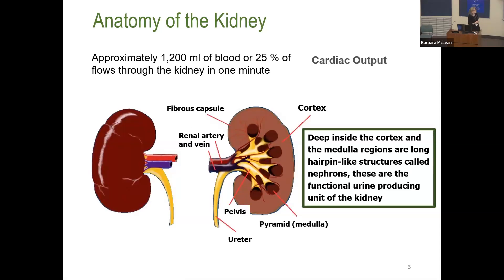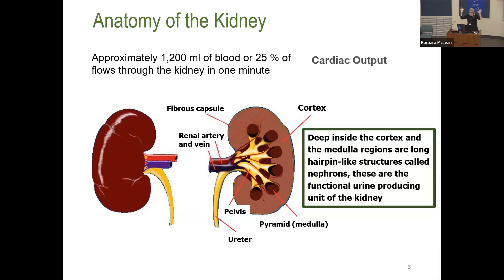The kidney has two million nephrons — nephrons are the functional unit of the kidney. Understanding the nephron helps us understand the renal conditions that occur under our care. First and foremost, we talk about the glomerulus, which is the filter of the kidney. The filter of the kidney is driven by volume and pressure.